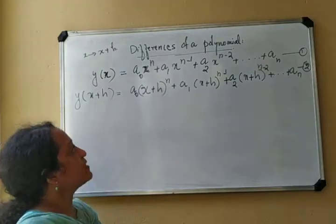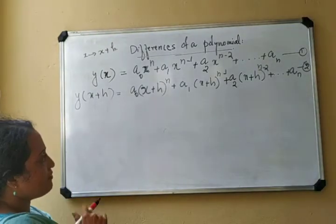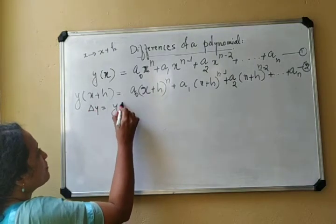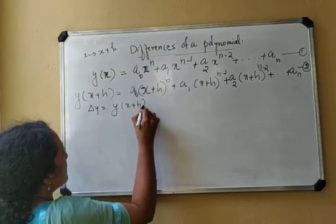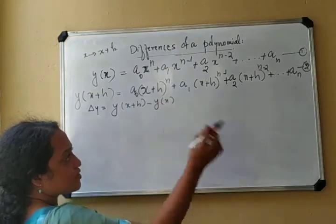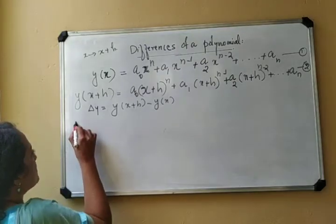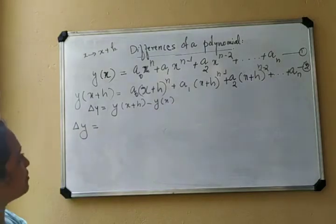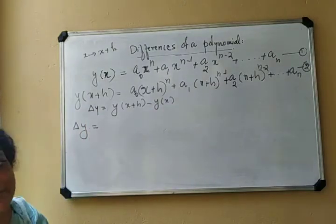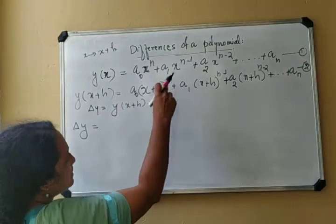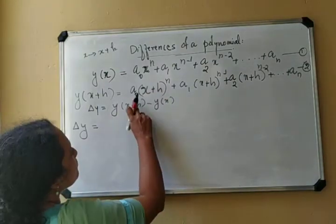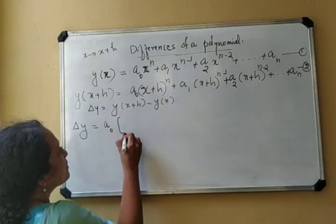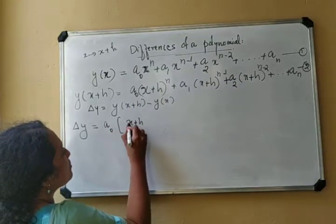Now the change in the y value, that is Δy, will be equal to y(x+h) minus y(x). That is equation 2 minus equation 1. We may subtract equation 1 from equation 2 term by term.